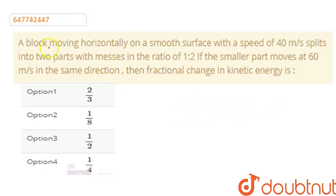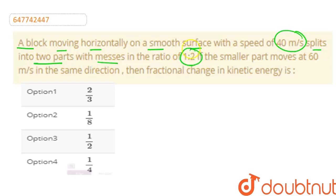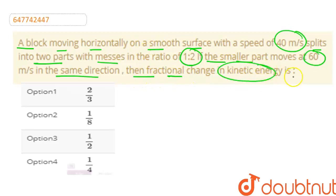This question: A block moving horizontally on a smooth surface with a speed of 40 meters per second splits into two parts with masses in the ratio 1:2. If the smaller part moves with 60 meters per second in the same direction initially, find the fractional change in kinetic energy.